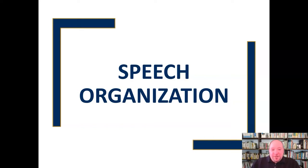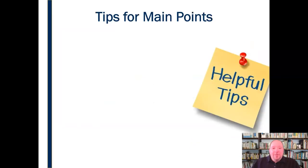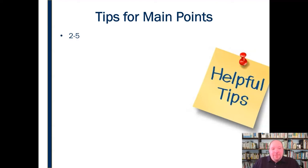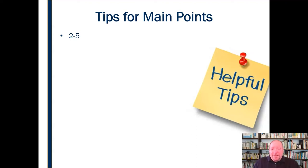That's what we're going to talk about in this video — some tips for speech organization, starting with how to organize main points. First of all, you ought to have between two and five main points for a speech. If you have just one, that's not really distinct enough. You ought to have at least two, but no more than five — and ideally stay closer to three or four. If you have more than five, they're all going to run together and it's hard for an audience to retain information.